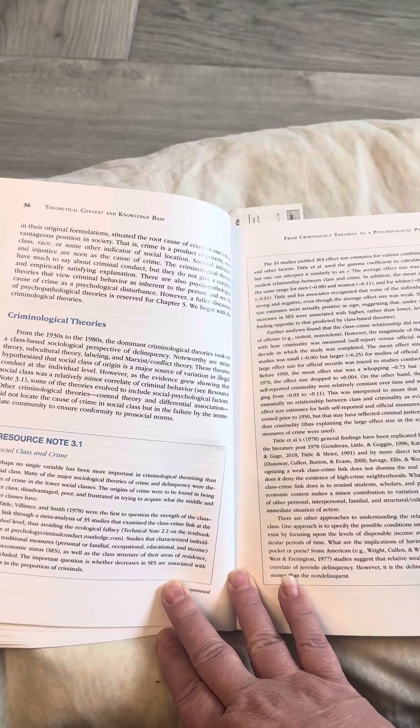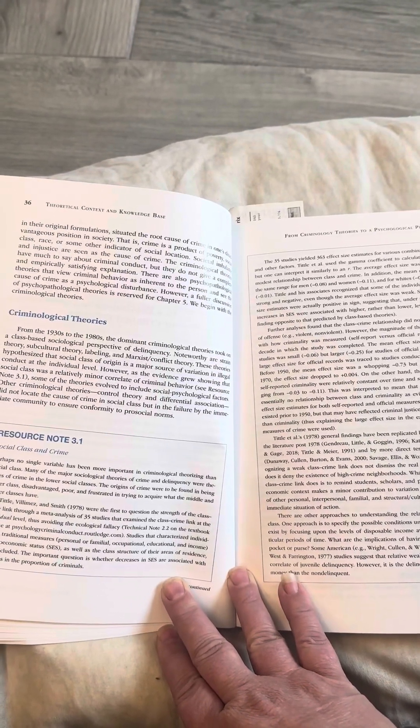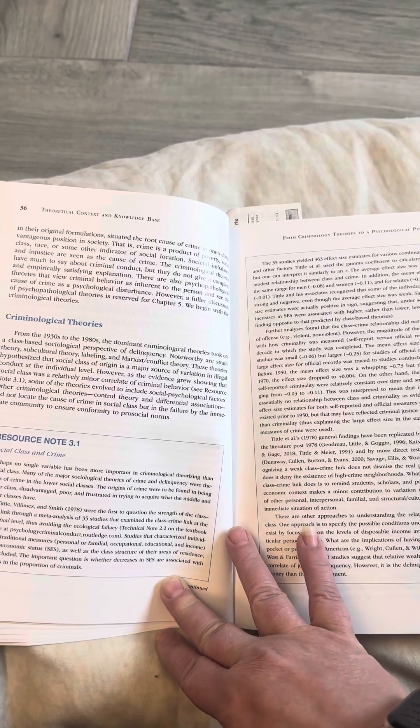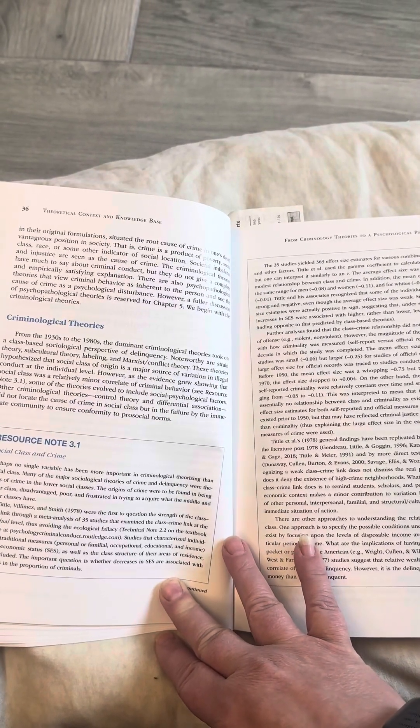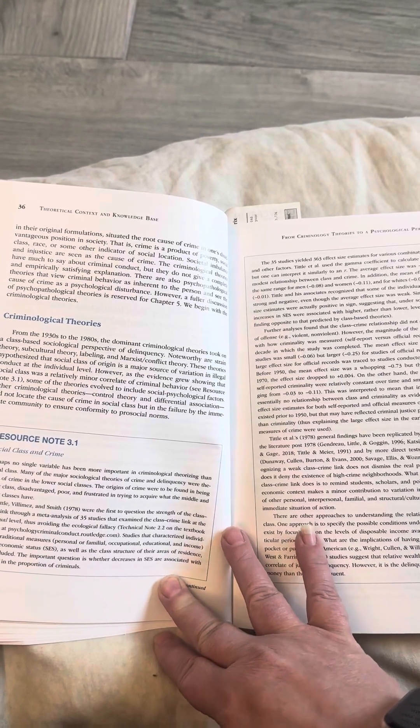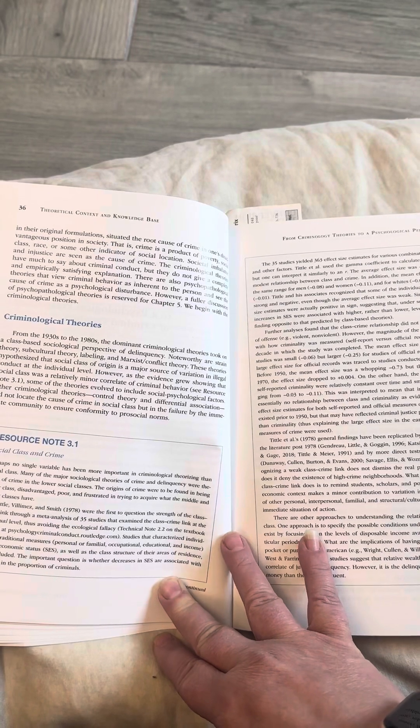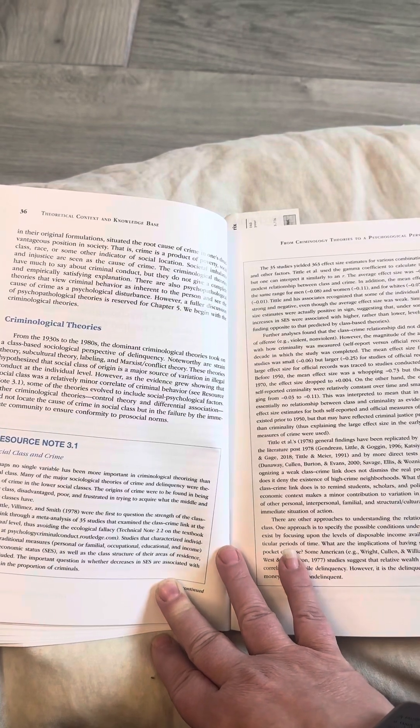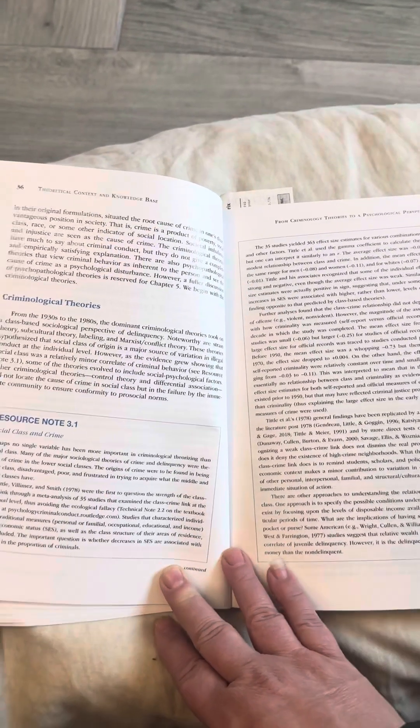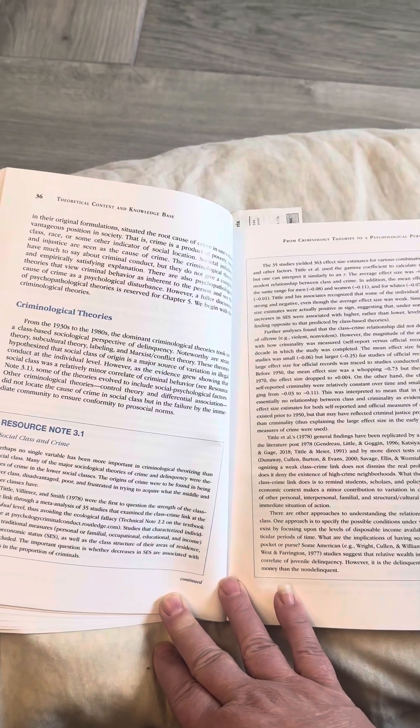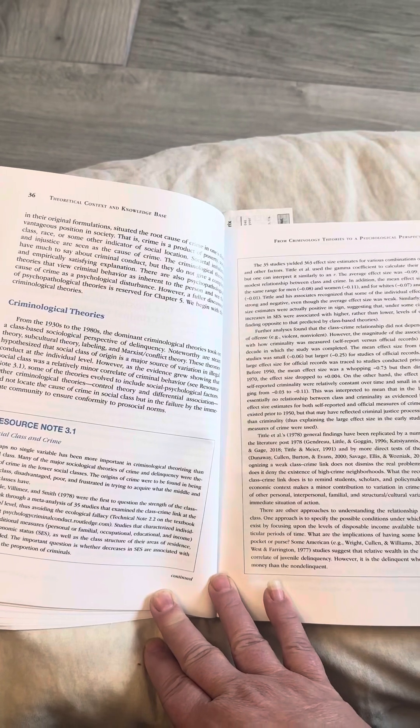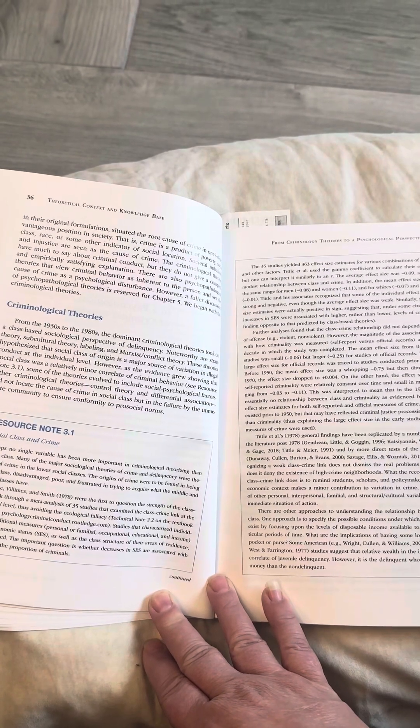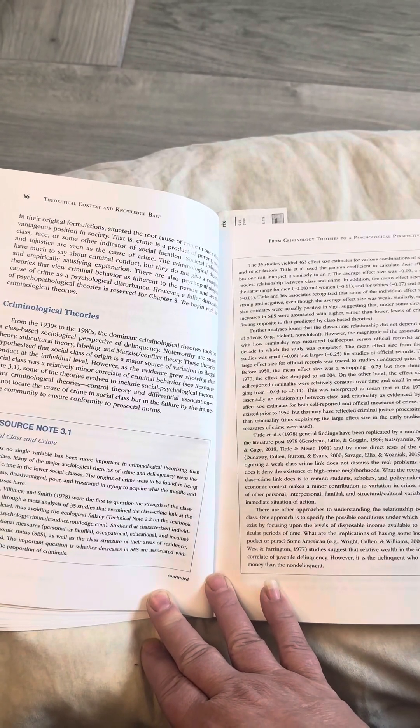Resource Note 3.1. Social class and crime. Perhaps no single variable has been more important in criminological theory than social class. Many of the major sociological theories of crime and delinquency were theories of crime in the lower social classes. The origins of crime are to be found in being lower class, disadvantaged, poor, and frustrated. In trying to acquire what the middle and upper classes have, Tidal, Villamas and Smith, 1978, were the first to question the strength of the class-crime link through a meta-analysis of 35 studies that examined the class-crime link at individual level, thus avoiding the ecological fallacy. Technical Note 2.2 in the textbook website.